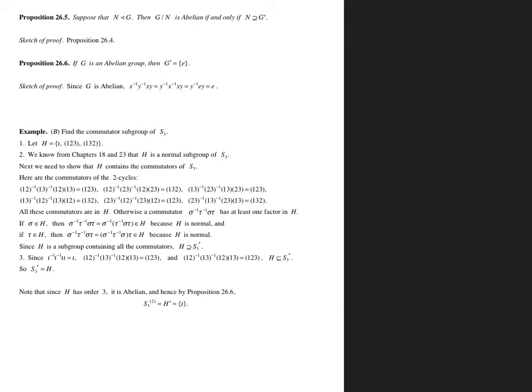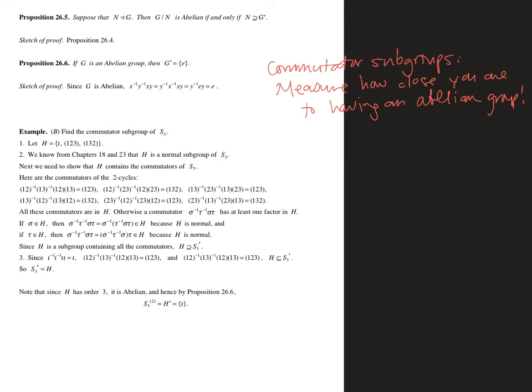So you can think of commutator subgroups as measuring how far away we are from being abelian. If the first commutator subgroup is the identity, then we're abelian right off the bat. Maybe the second commutator subgroup is the identity — that says we're not abelian right away, but not that far off. There are only a few things that don't actually commute with each other. The big picture is that commutator subgroups measure how close you are to having an abelian group.